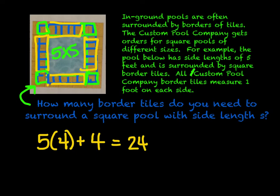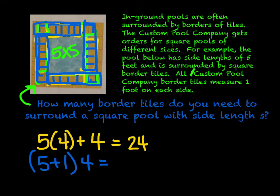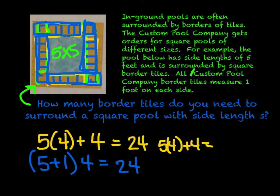Another way to think about this is to say we have (5 + 1) for each side — taking the 5 border tiles and adding that one corner tile — and we have 4 sets of those, so (5 + 1) times 4. That's another way of arriving at 24. So the expression 5 times 4 plus 4 is equivalent to (5 + 1) times 4 — this illustrates the concept of equivalent expressions.